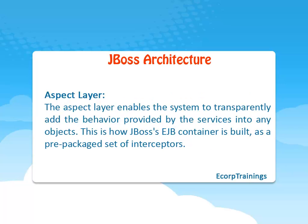Aspect layer: The aspect layer enables the system to transparently add the behavior provided by the services into any objects. This is how JBoss's EJB container is built, as a prepackaged set of interceptors.